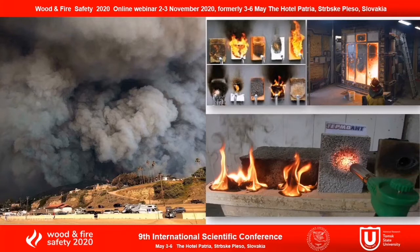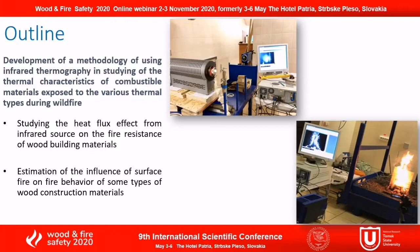In the literature there are a lot of experimental studies concerning the fire hazard of wood, and most of them use contact methods of measuring the temperature during fire engineering tests of building materials. I've divided my talk into two main sections: first, studying the heat flux effect from an infrared source on the fire resistance of wood building materials; and second, the estimation of the influence of surface fire on the fire behavior of subtypes of wood construction materials.